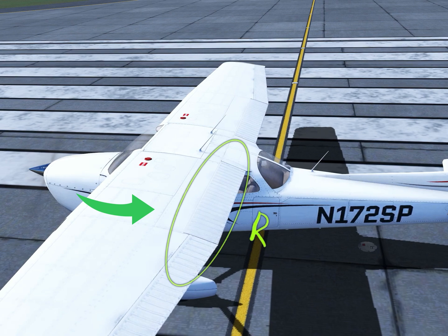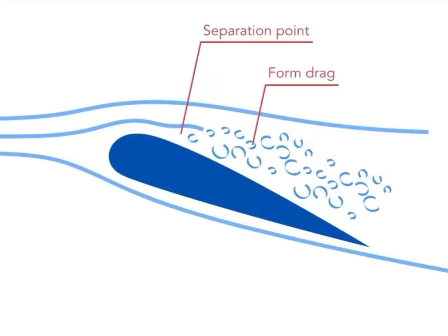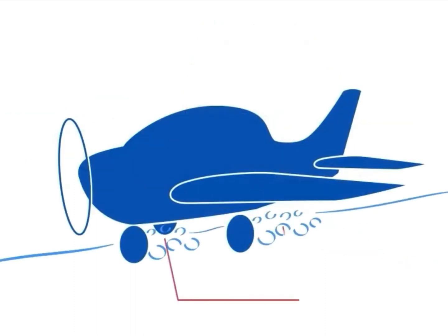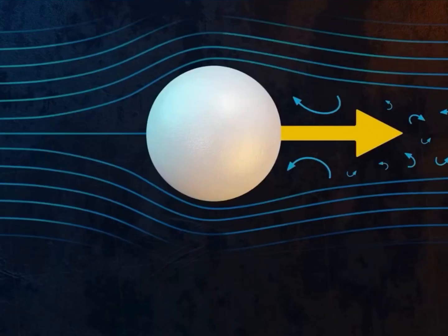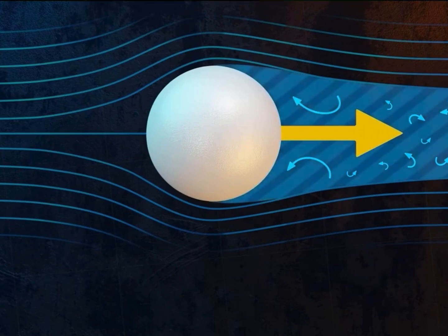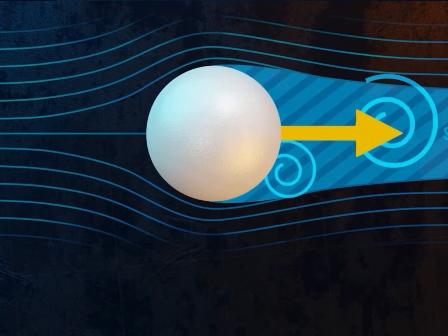Everything that sticks out into the airstream creates form drag — antennas, struts, landing gears, door handles, and so on. Form drag is a result of an object's general shape in relation to the relative wind. The turbulent wake caused by the separation of airflow from the surface of a structure is what causes this type of drag.